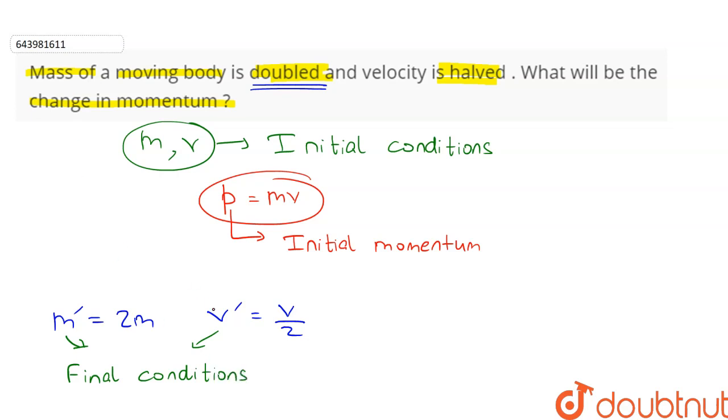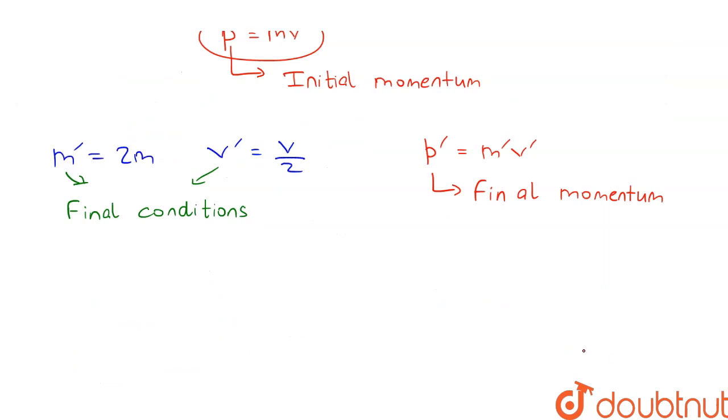Therefore, the corresponding momentum p dash will be equal to m dash into v dash. This is the final momentum. Inserting the values of m dash and v dash, we have p dash equal to 2m into v by 2.